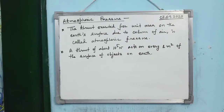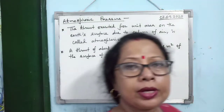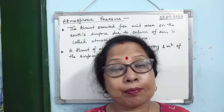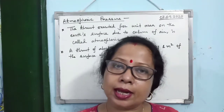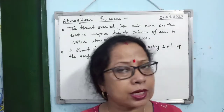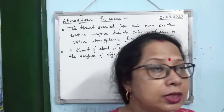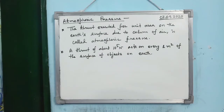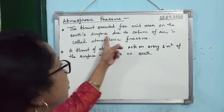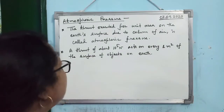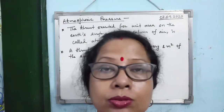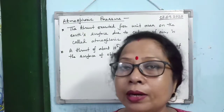The next topic is atmospheric pressure. The pressure exerted by the column of air above Earth's surface is known as atmospheric pressure. Pressure is thrust per unit area. One atmospheric pressure equals 10⁵ newton per meter square.